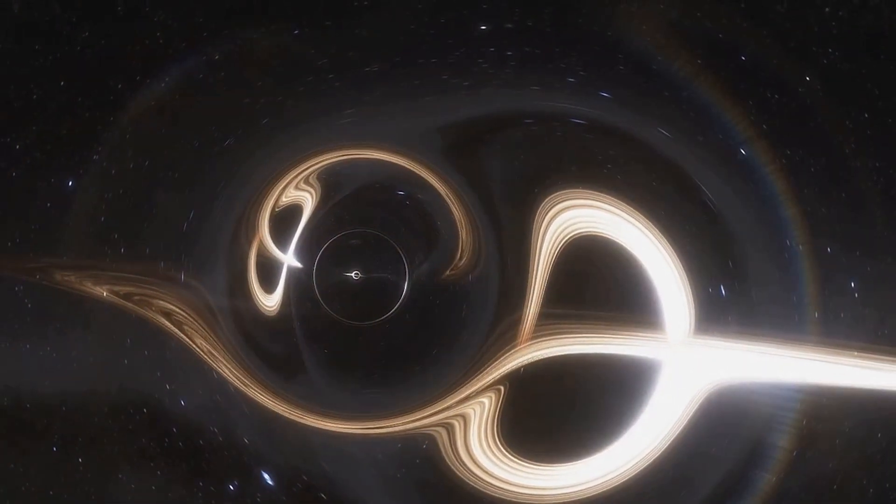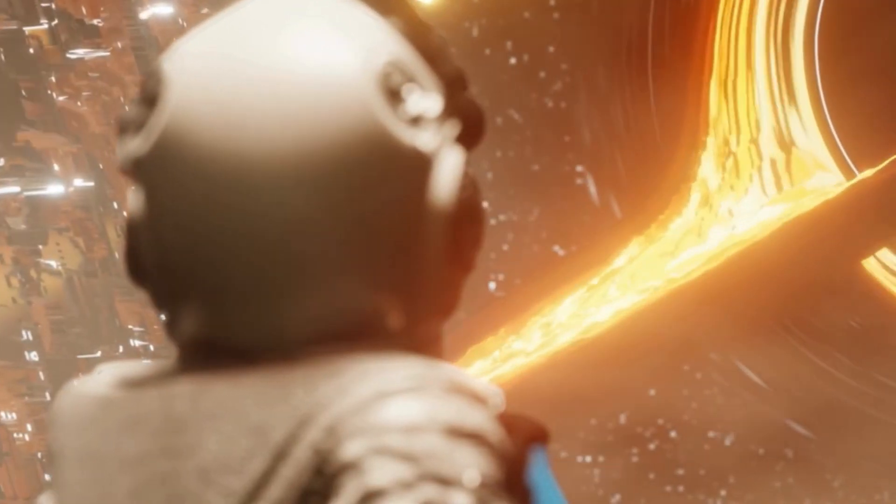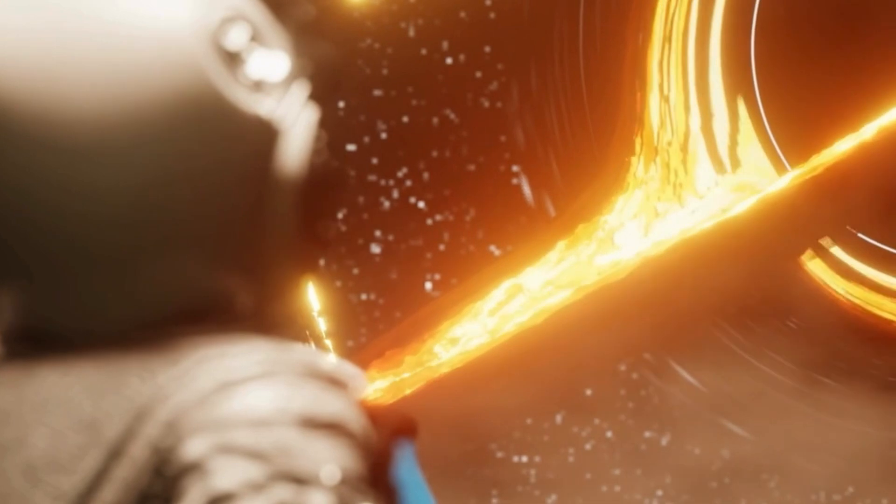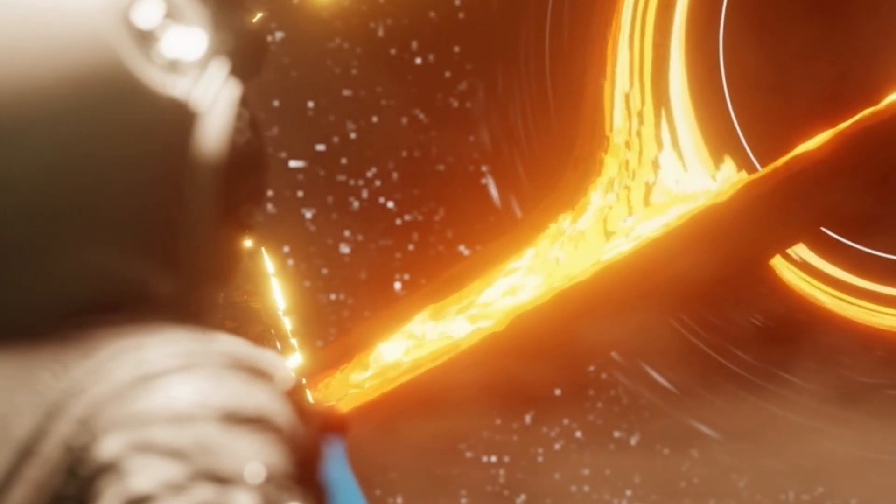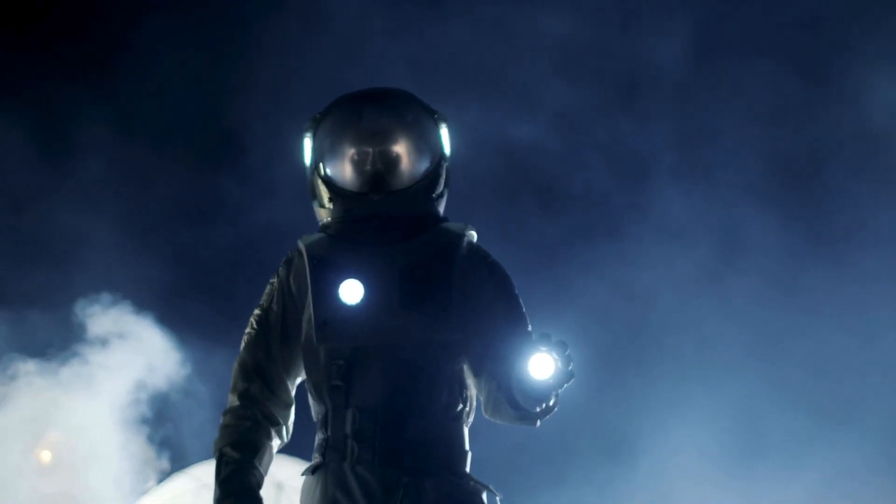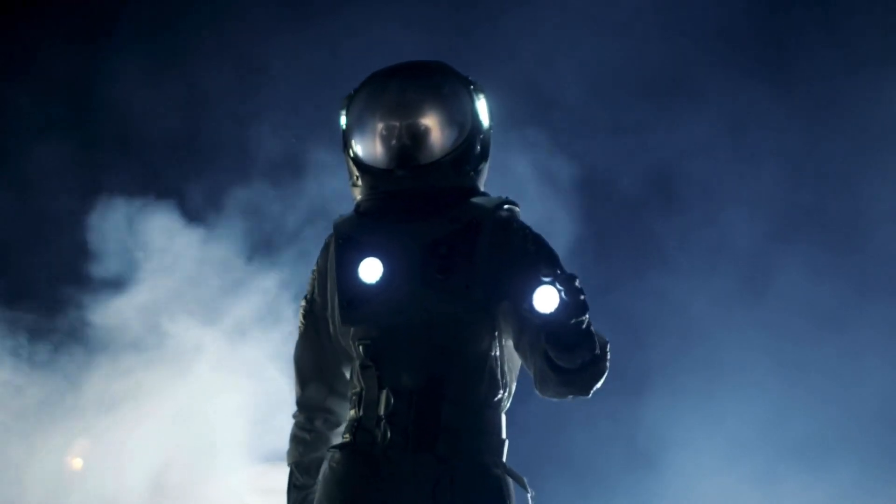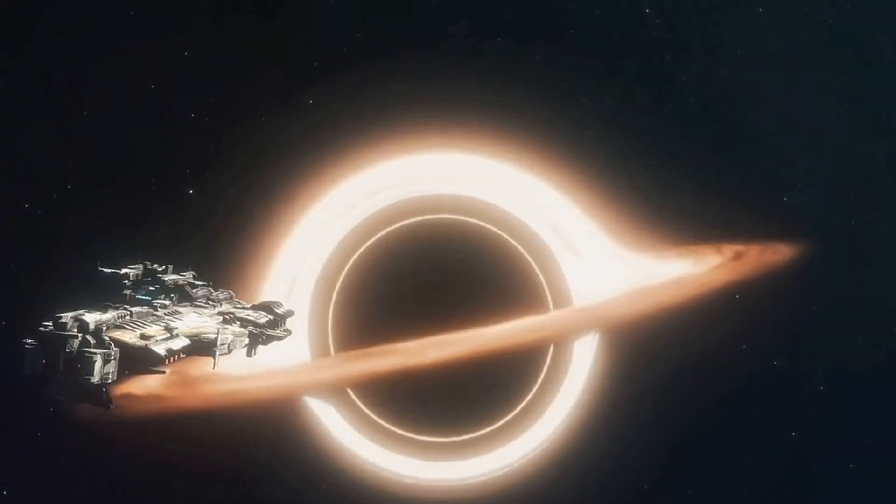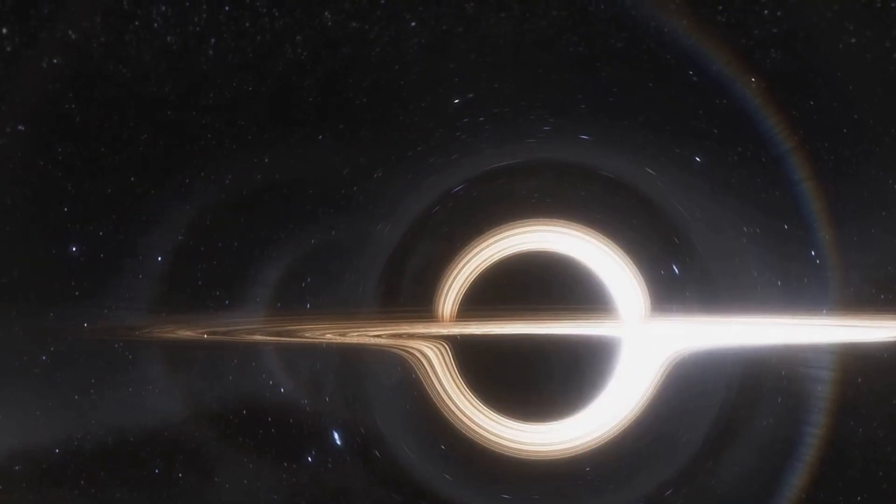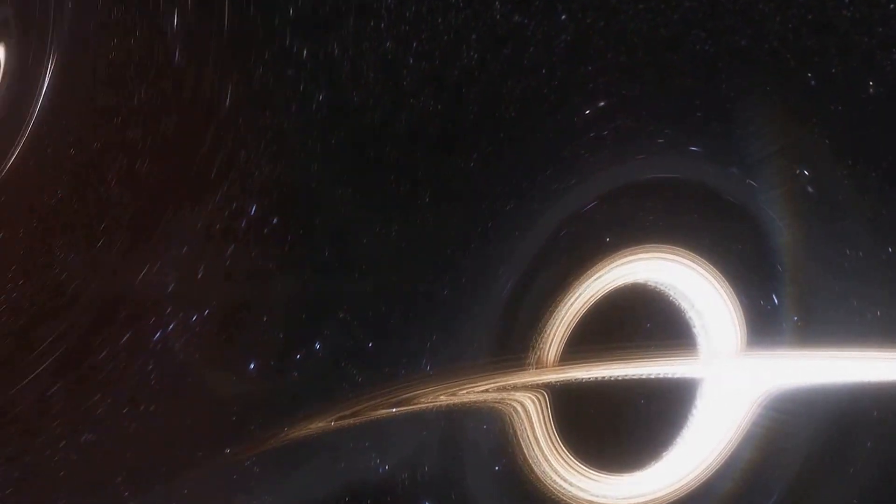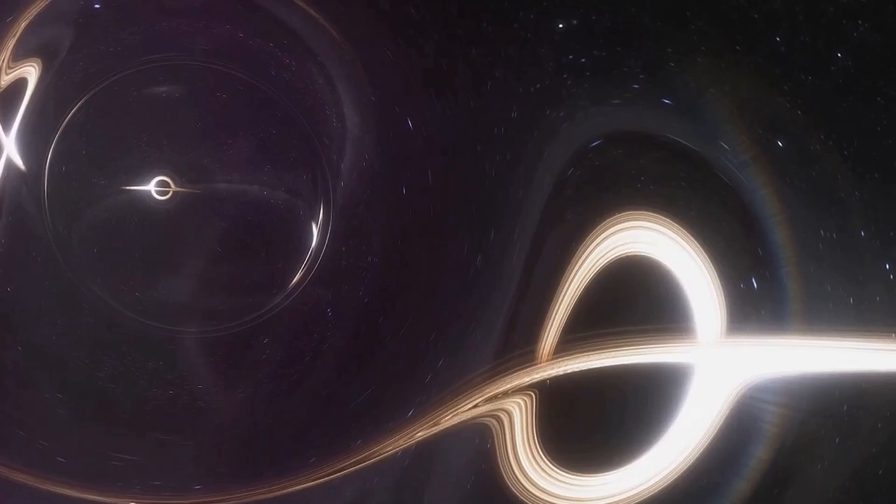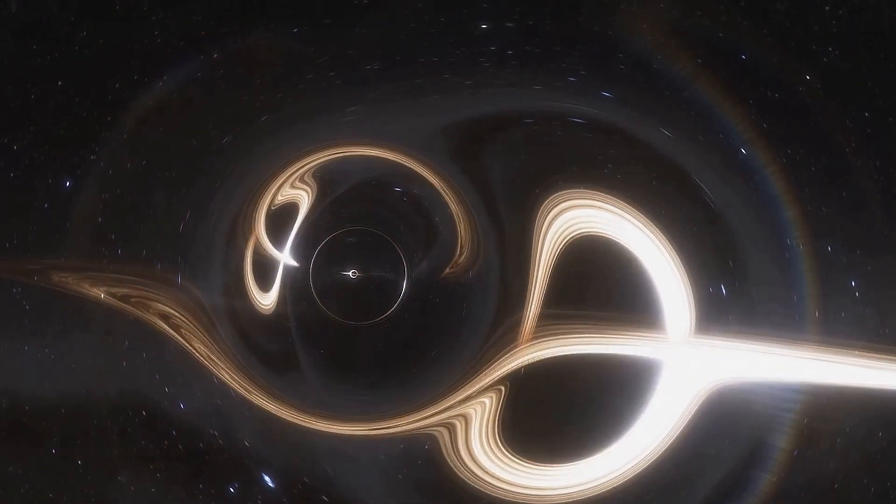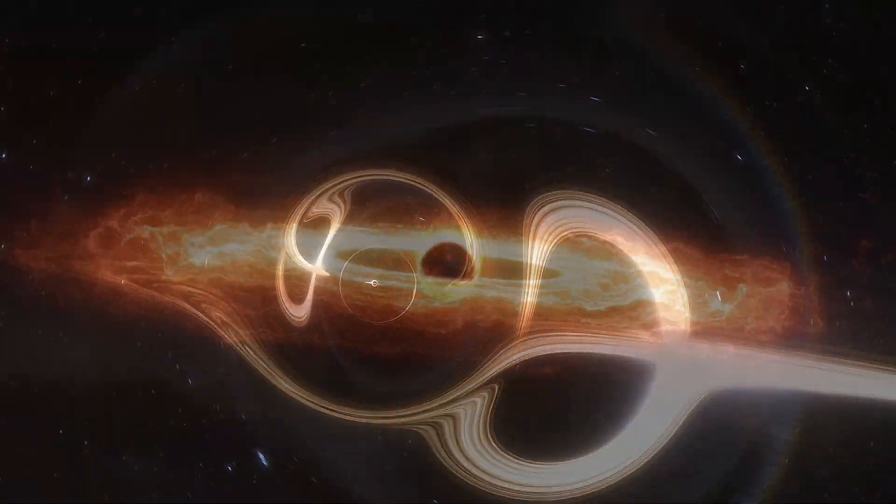But what about life? Could it exist in such a harsh environment? This brings us to the concept of the habitable zone, the Goldilocks zone of not too hot, not too cold, where conditions might be just right for life as we know it. In the vicinity of a black hole, this zone could theoretically exist. Yet the intense radiation and gravitational forces would certainly make it a challenging place for life to survive. So, while life as we know it might not thrive near a black hole, the possibility of some form of existence cannot be entirely ruled out.